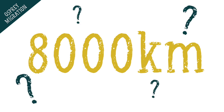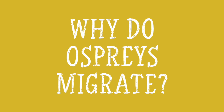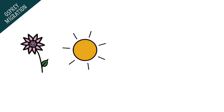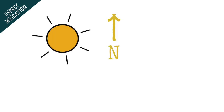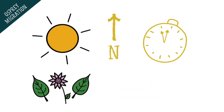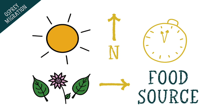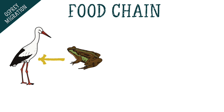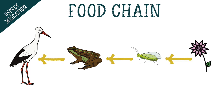So why do they migrate? Well, it's all to do with seasons and what comes with them. During the summer in northern countries the days are very long and sunny and so the climate is warm. This means that plants and algae are able to grow really fast, which provides food for other animals, and this is the start of a food chain. A food chain is a series of creatures or organisms that depend on the next organism in the chain as a source of food.